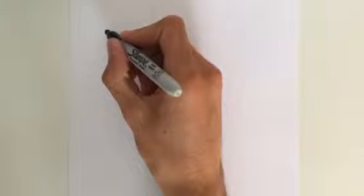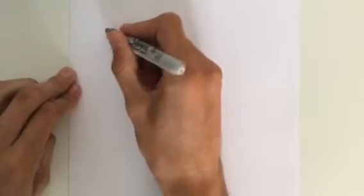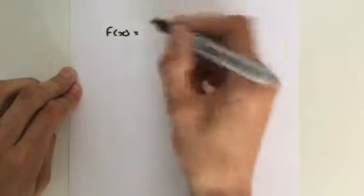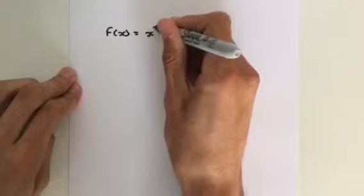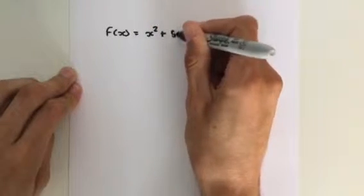So in the last video, we looked at differentiating x squared using the definition of a derivative. We're going to do the same thing today, but we're going to have a different function. This function is going to be f of x, that's going to equal x squared like last time, but we're going to add another term involving x, which is going to be 5x.